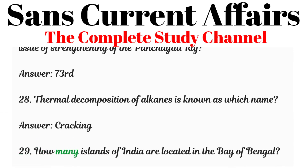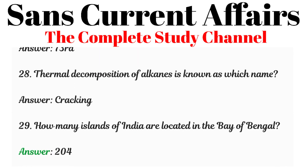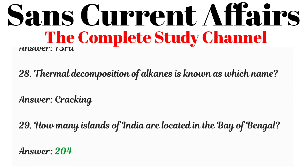Question 29: How many islands of India are located in the Bay of Bengal? Answer: 204.